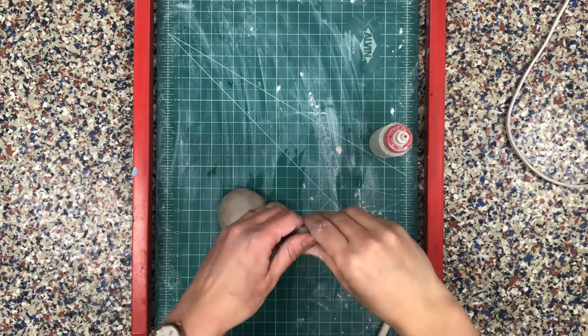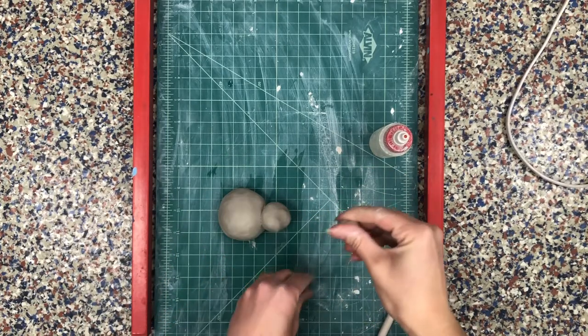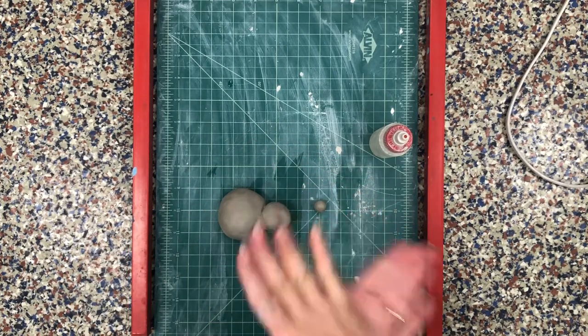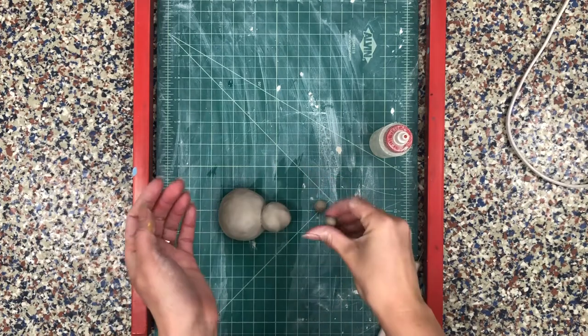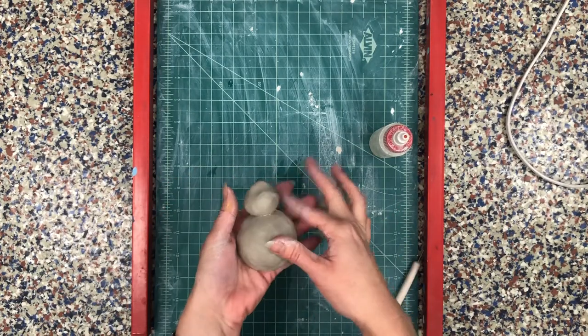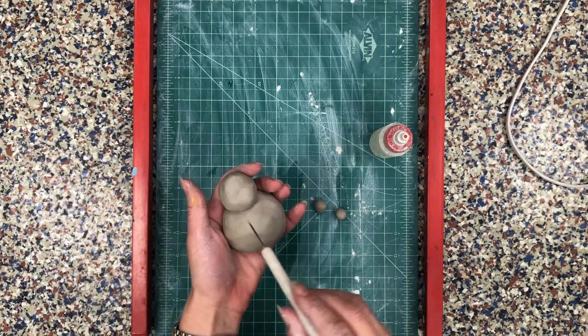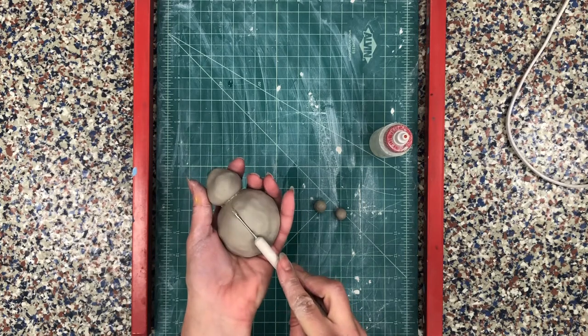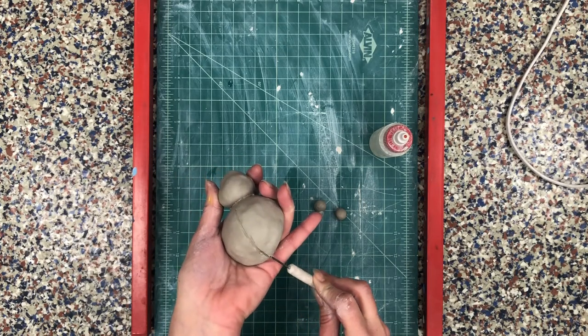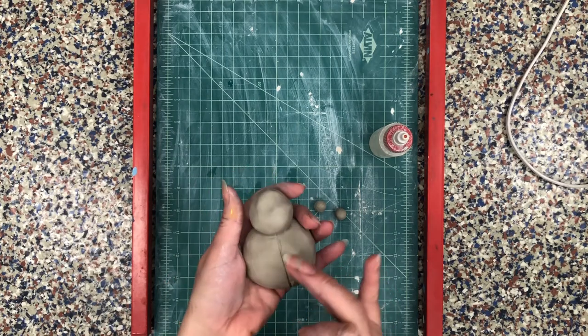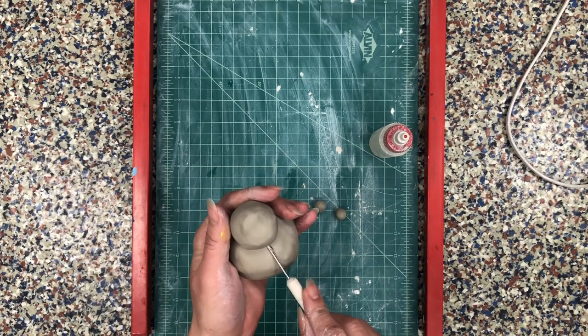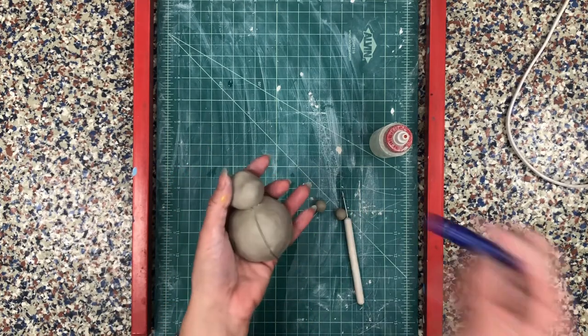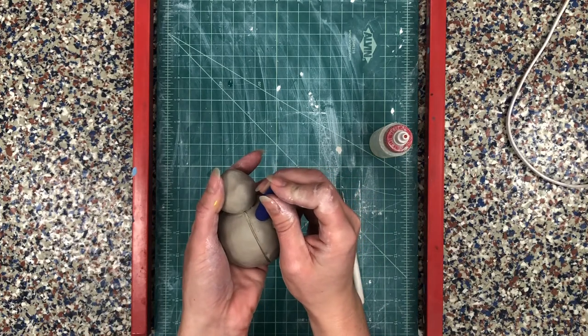Now I'm going to create any other extra details that I want to add to my bug such as eyes or anything else. This is another really good time to create textures and designs on the body of your bug. So I'm going to use some of my clay tools to sort of press in and make some textures. So I'm drawing a line down the back to make him have separate wings and then I can use some other clay tools to press in and make different patterns and designs.